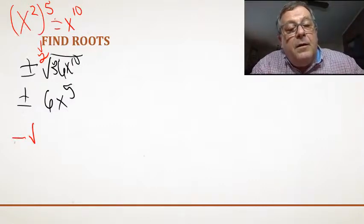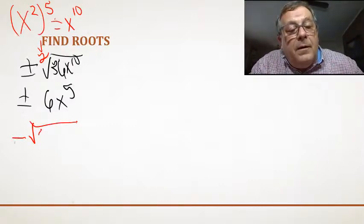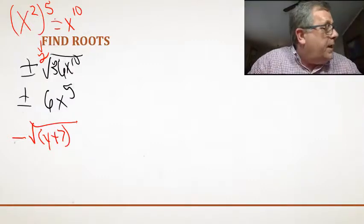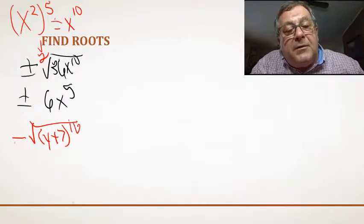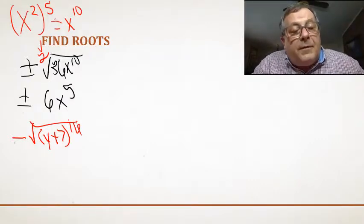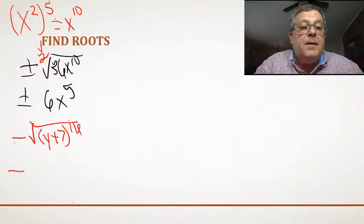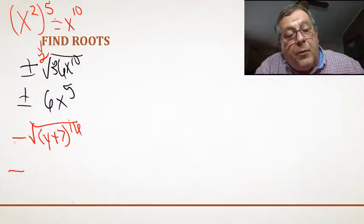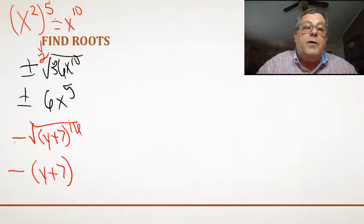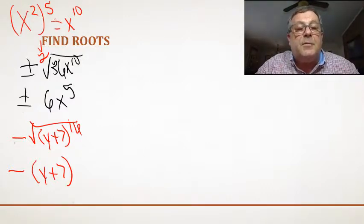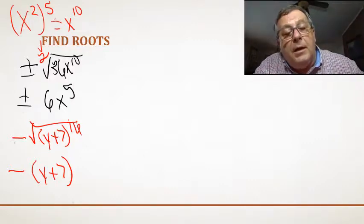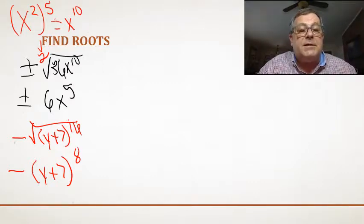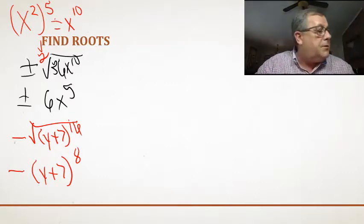Let's look at another one. We're asked to simplify negative the square root of, in parentheses, y plus 7 raised to the 16th power. I keep my negative sign out in front. The y plus 7 is in parentheses — there's nothing to simplify inside because I've got a variable and 7 is a prime number. So I keep my parentheses, y plus 7, and take 16 divided by 2 to get 8. My answer is negative (y plus 7) raised to the 8th power.